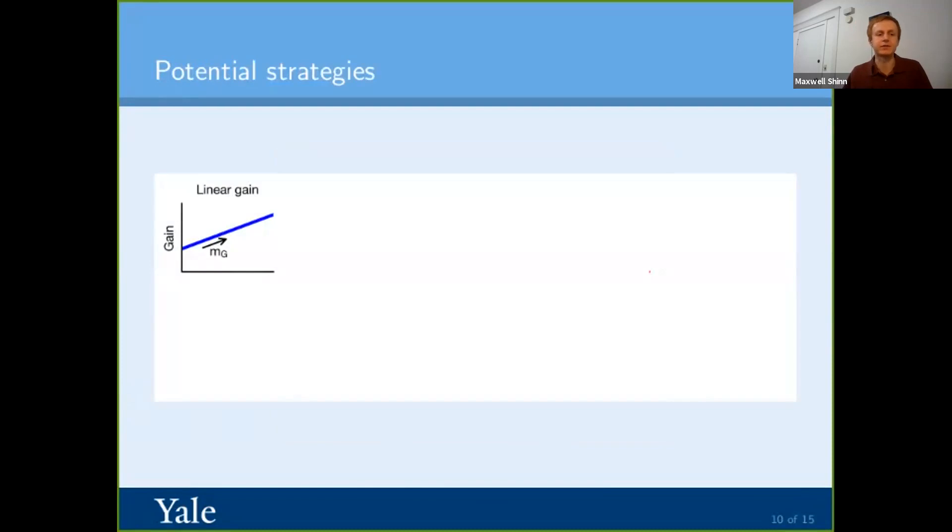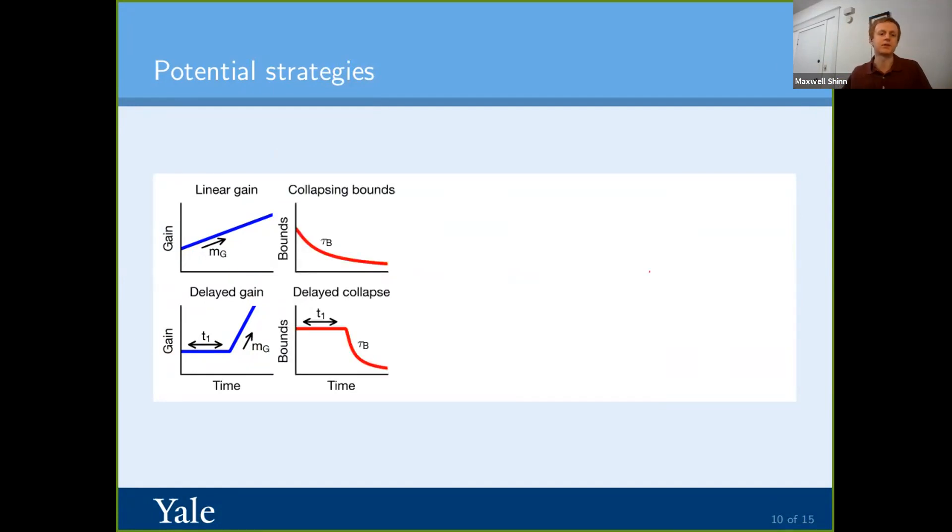So we wanted to know what type of mechanism might be underlying the strategy that the monkeys are using. So we tested a couple of things. So first, we tested an urgency signal based on a gain function. And so an urgency signal is just you're more likely to respond as time goes on. You don't want to wait forever. And we implement this one by saying, OK, let's scale the evidence. So as you go through time, you count your evidence more. You weight your evidence more over time. And you can do that linearly. You can also do this with a non-linearity like that step. We can also do this with collapsing bounds. So we can change the bounds. Instead of the bounds being flat the whole time, we can make them collapse also either right away or after a delay. Or we cannot have either of these. So these are all potential strategies that the monkey could be using.